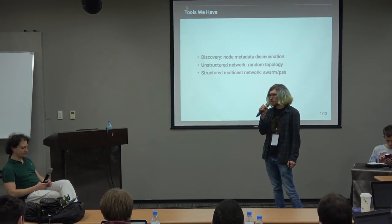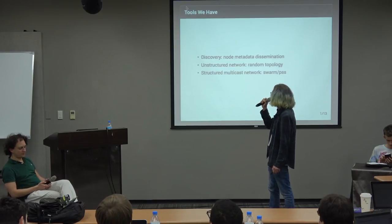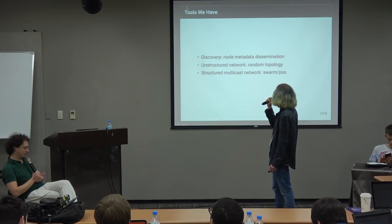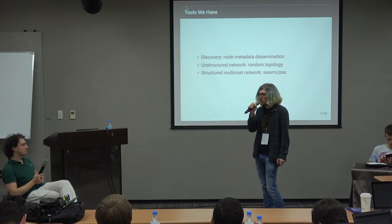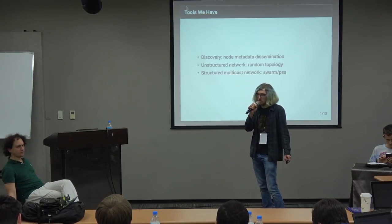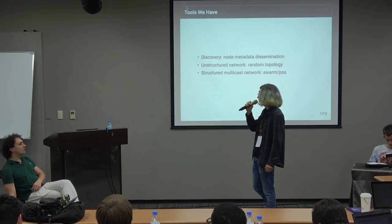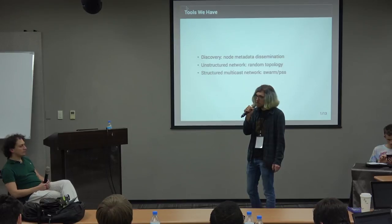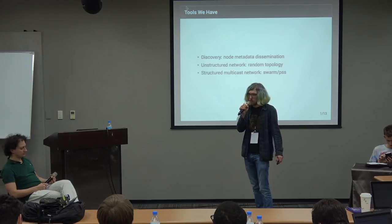The P2P network we have is built on a set of tools including a discovery mechanism that can relay node metadata. The mainnet runs on an unstructured P2P network with a more or less random topology — it doesn't really matter which exact node you're connected to, as long as it's reasonably well connected. In Geth we also have a structured P2P network on one side, but it's not used for the Ethereum blockchain at the moment.